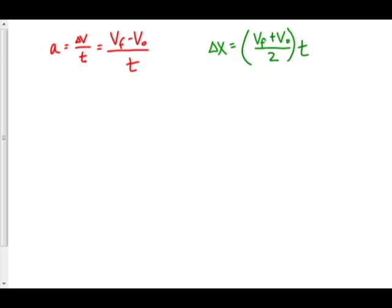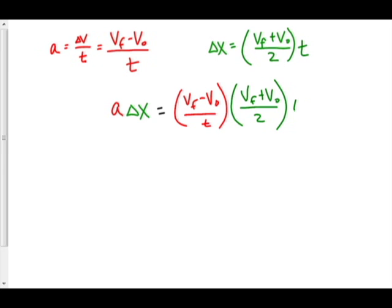And what I'm going to do is I'm going to combine these two equations, and I'm going to do so in a way that eliminates time. I'm going to get rid of that t variable. And I'm going to do that by multiplying these two equations together, left and right side. So I'll start over here. Acceleration times displacement should be equal to the progress. So we have the right-hand side here. So we have vf minus v0 over t, and this term over here. You can see that the t's will cancel, and that I will be left with...